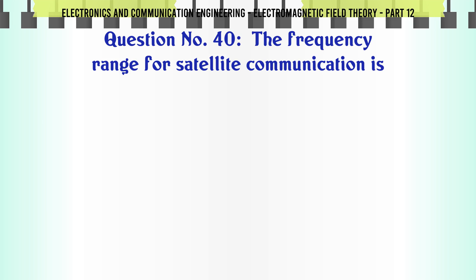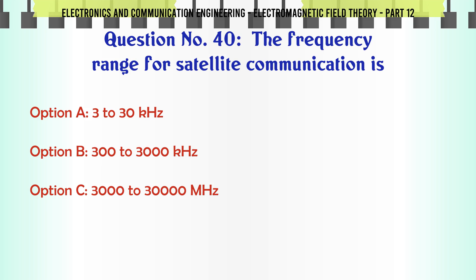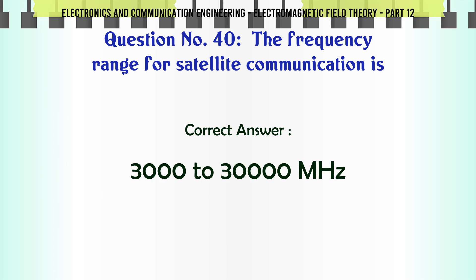The frequency range for satellite communication is: A. 3 to 30 kHz, B. 300 to 3000 kHz, C. 3000 to 30000 kHz, D. above 30000 kHz. The correct answer is 3000 to 30000 kHz.